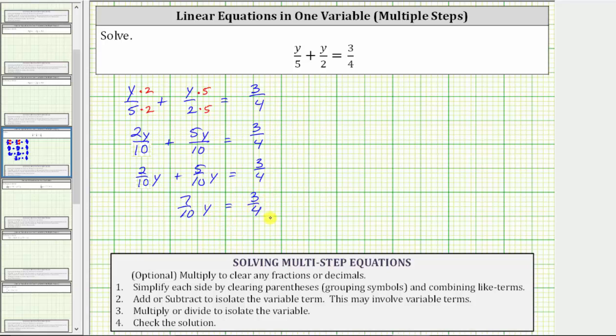And now we need to multiply or divide to solve for y. Seven-tenths y means seven-tenths times y, so we're probably thinking we should divide both sides by seven-tenths, but remember dividing by seven-tenths is equivalent to multiplying by the reciprocal, which means to solve for y, we will multiply both sides by 10 sevenths.